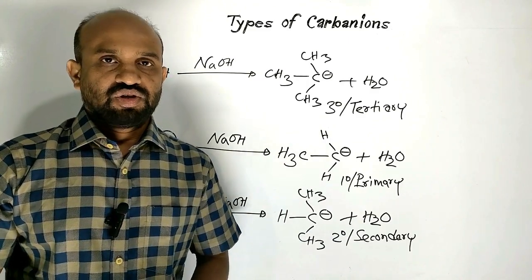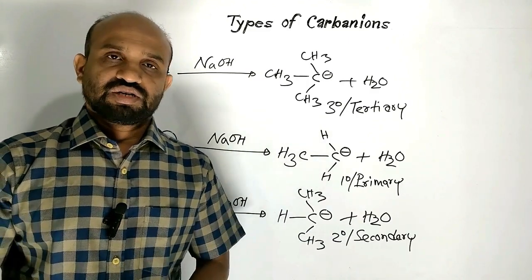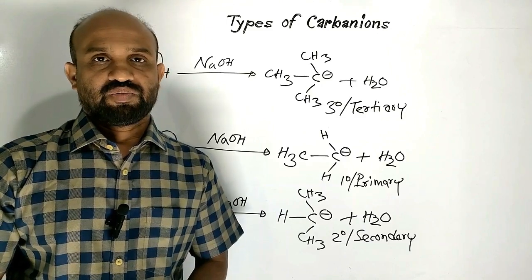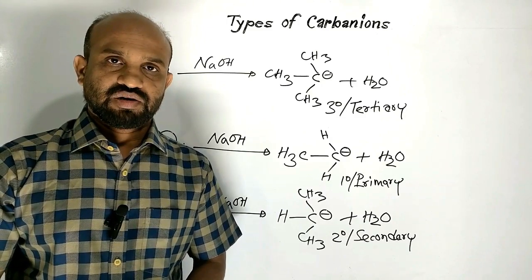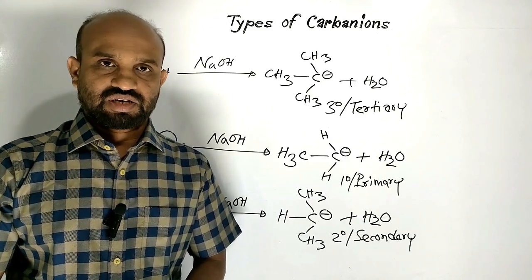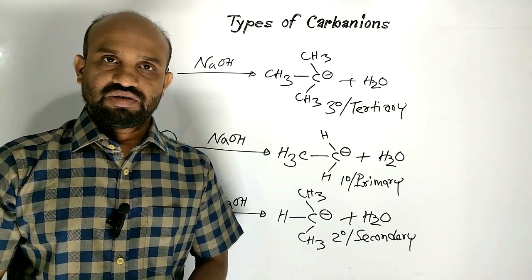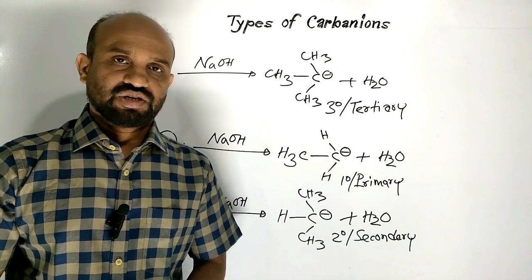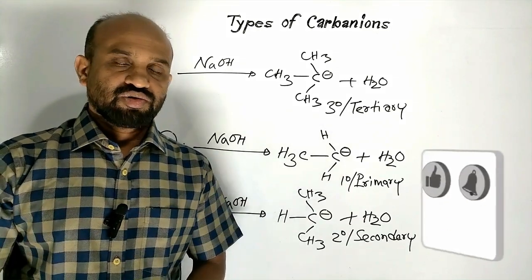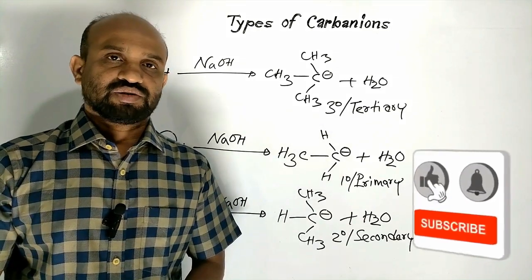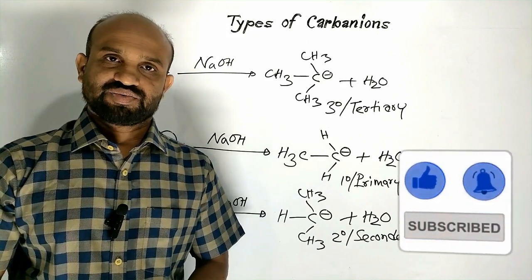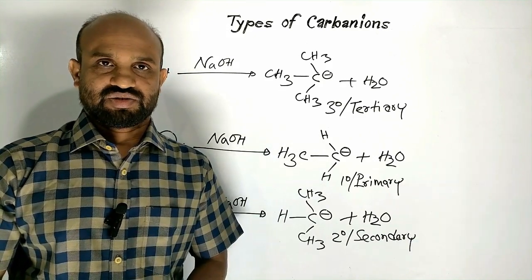So we got three types of carbanions: one-degree or primary carbanion, two-degree or secondary carbanion, and three-degree or tertiary carbanion. Another carbanion we got is the methyl carbanion. This is all about types of carbon ions.